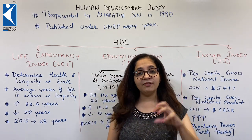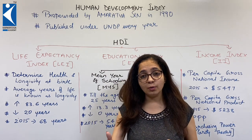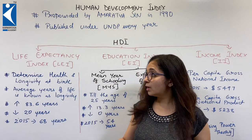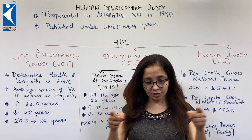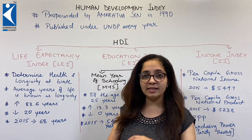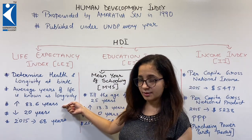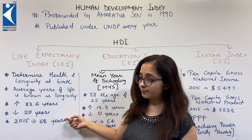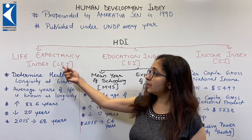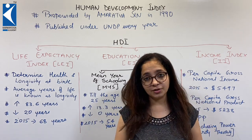The first one is the Life Expectancy Index. Life expectancy refers to how long a person will live after birth — but also how long they will live healthily. So longevity and health, a good life and a long life, are considered. The highest is 83.6 years and the lowest is 20 years. According to the 2015 report, India's Life Expectancy Index was 68 years.